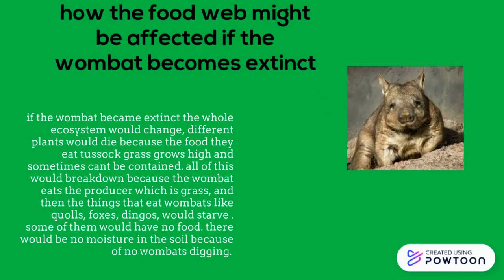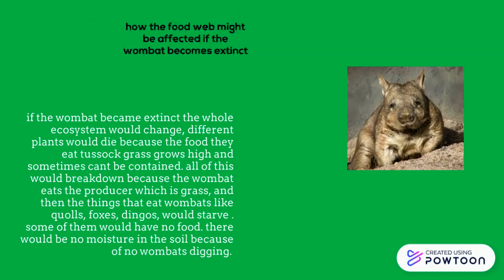How the food web might be affected if the Wombat becomes extinct. If the Wombat became extinct the whole ecosystem would change. Different plants would die because tussock grass grows high and sometimes can't be contained. All of this would break down because the things that eat Wombats — like Wallabies, foxes or Dingoes — would starve and some would have no food. There would also be no moisture in the soil without Wombats digging.